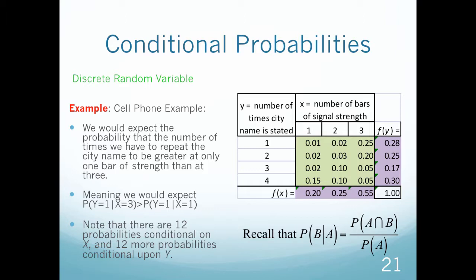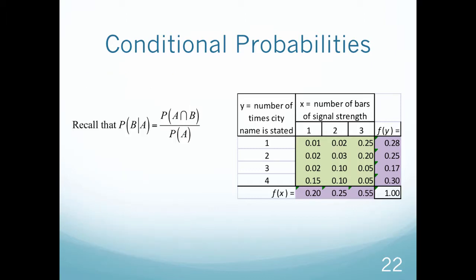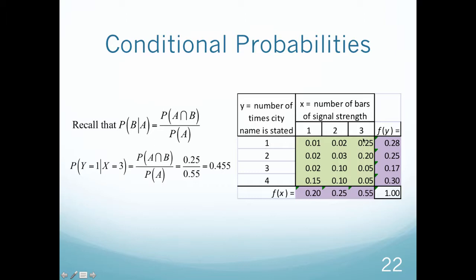As you write down a formula like the probability of Y equaling 1 given X equals 3, say what it means in your head. To calculate it, find the intersection when Y equals 1 and X equals 3, which is 0.25, then divide by the marginal probability of X, which is 0.55. That gives 0.455.